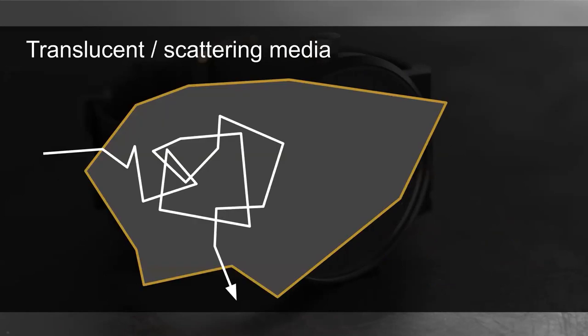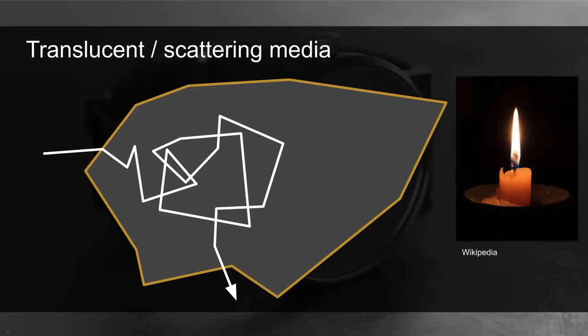Another material type we've had in Keyshot for a long time is translucent or scattering media. What makes these special is that light not only interacts with the surface but also bounces around many times inside the object. This is very apparent with candle wax, where light from the flame hits the surface, enters deep into the wax, bounces around many times, and exits at a position far away from where it entered. Both rough and translucent materials treat light as a ray or particle. But in reality, light is actually a wave, which becomes relevant for coated materials when we zoom in very closely.